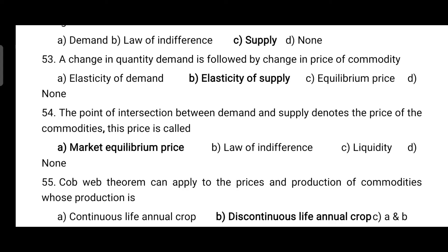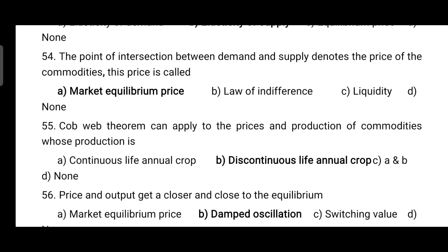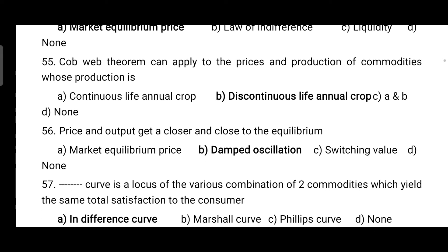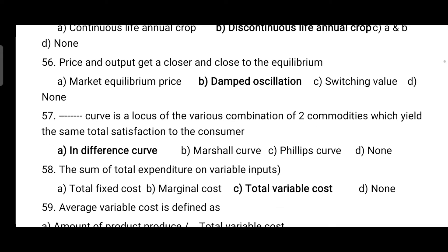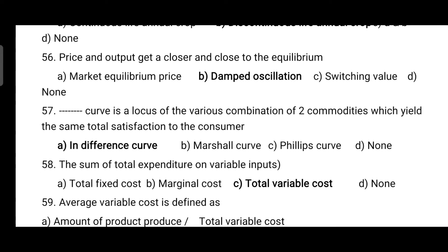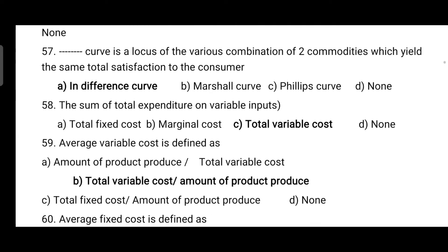The point of intersection between demand and supply denotes the price of a commodity, and this price is known as the market equilibrium price. The cobweb theorem can apply to prices and production of commodities whose production is discontinuous, like annual crops. Price and output get closer and closer to equilibrium in a damped oscillation. The indifference curve is a locus of various combinations of two commodities which yield the same total satisfaction to the consumer.